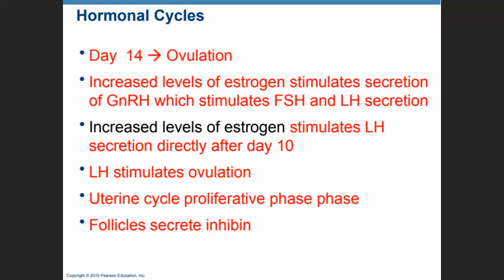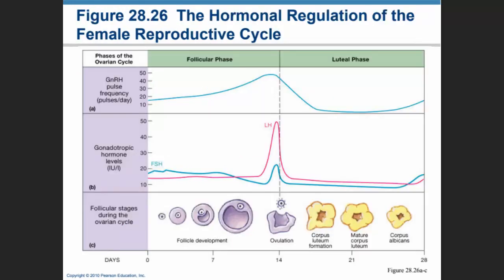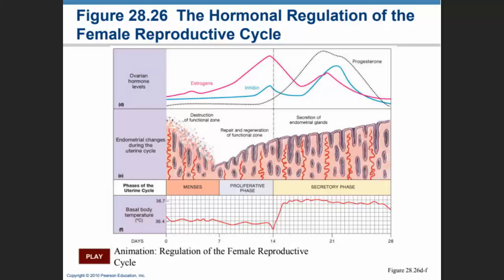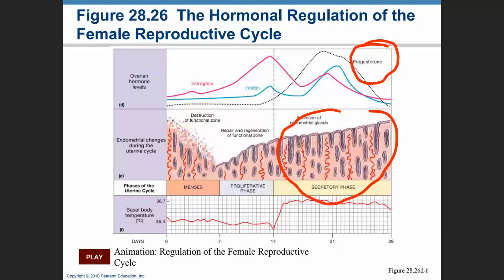Day fourteen is when ovulation happens, due to an increase in levels of FSH and especially LH — LH is the hormone of ovulation. This initiates the proliferative phase of the uterine cycle, and the follicular cells secrete inhibin to stop secretion of FSH and LH and prevent initiation of another cycle. After ovulation, we're going to be in the luteal phase of the ovarian cycle and the secretory phase of the uterine cycle. During that phase, levels of progesterone, which is the hormone of pregnancy, are very, very high.